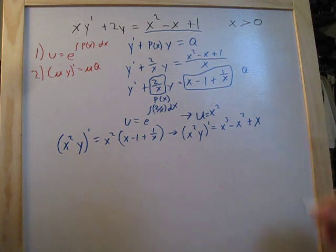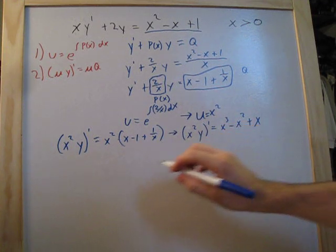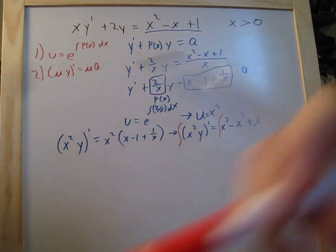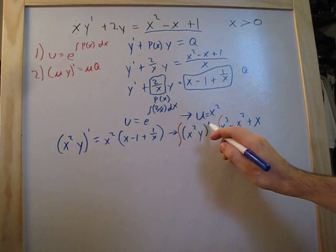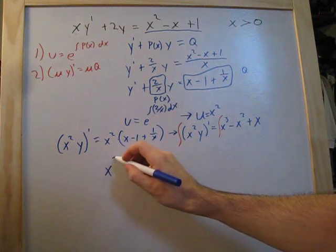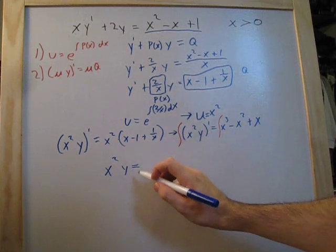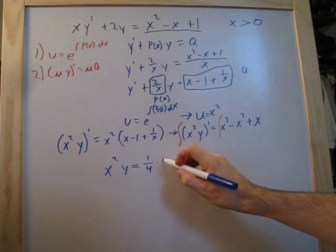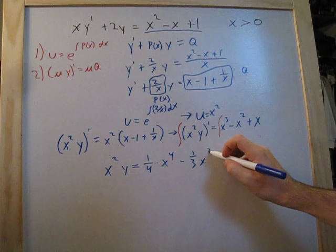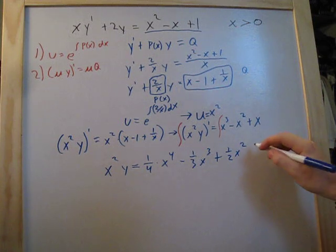The next thing we need to do is get rid of this prime, so we take the integral of both sides. The left side simply becomes x squared y. On the right side, x cubed integrates to one-fourth x to the fourth, x squared integrates to minus one-third x cubed, and x integrates to one-half x squared. And as with any integral, we add the constant c.